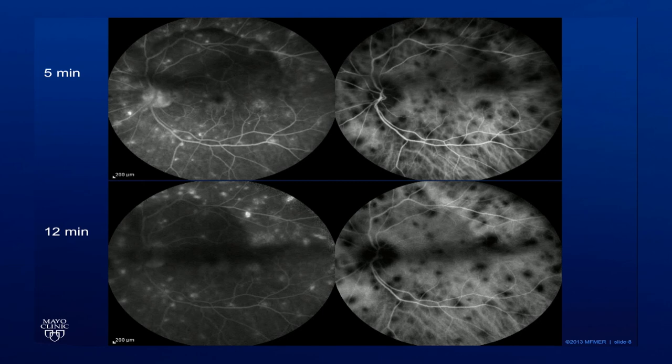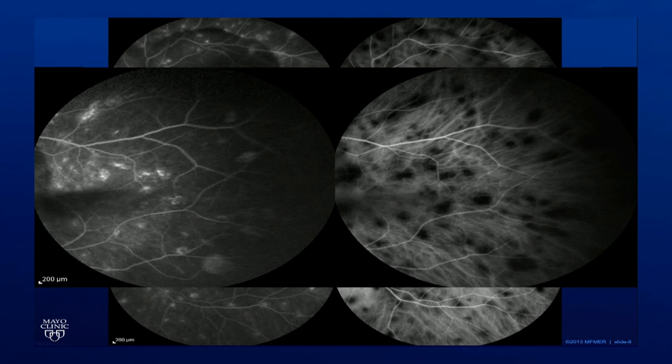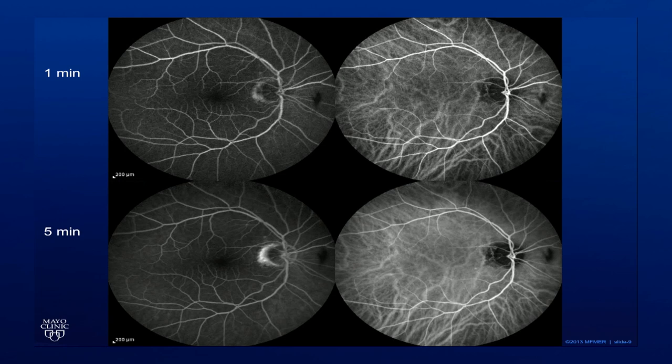Here's a view looking temporally in the left eye, again showing these lesions — fluorescein on the left and ICG on the right. This is the right eye, with one-minute and five-minute frames which show that it was essentially normal. That dark spot nasal to the optic nerve was a shadow from a floater.